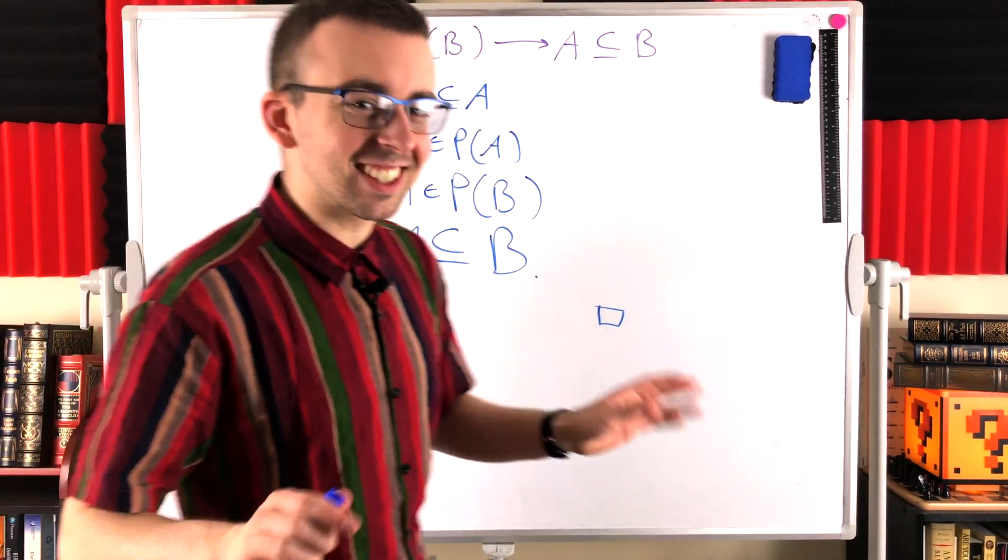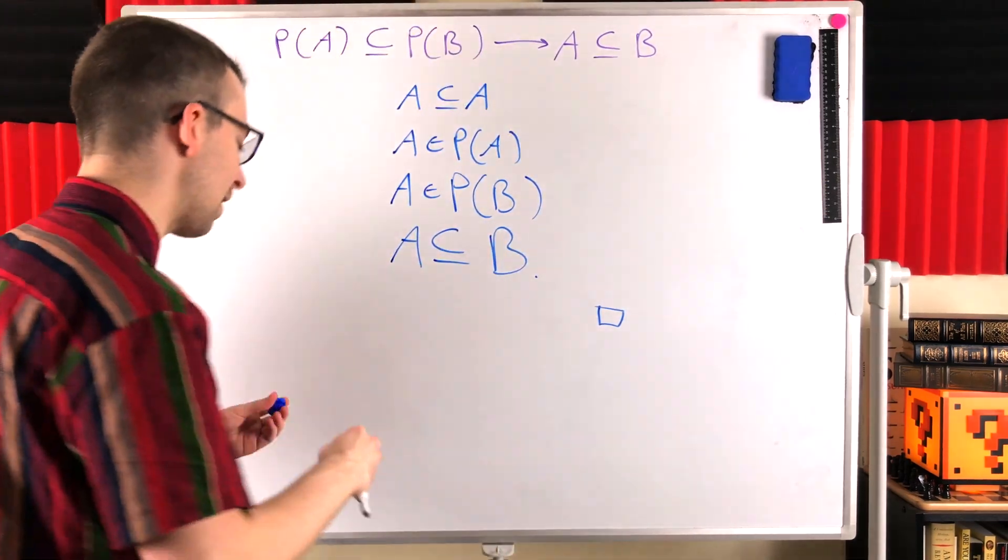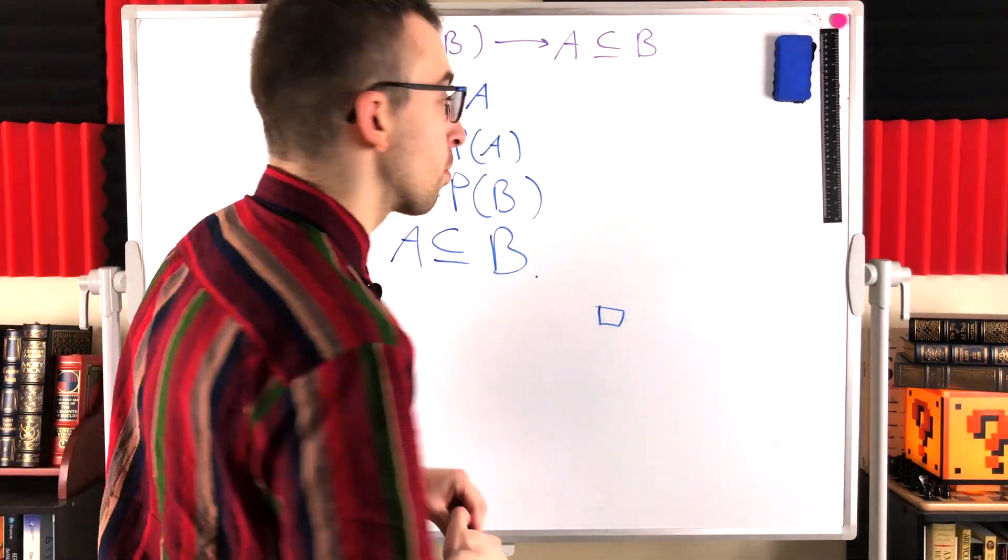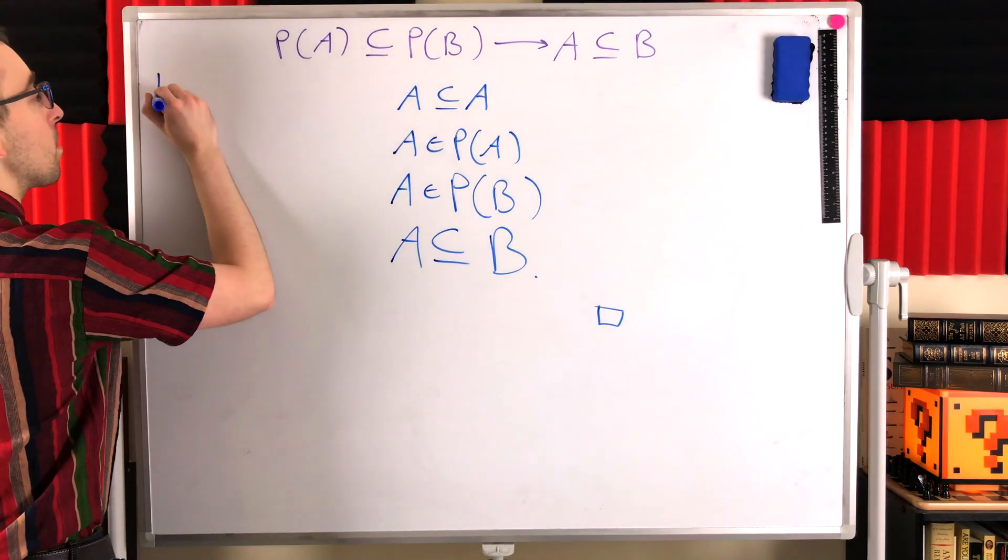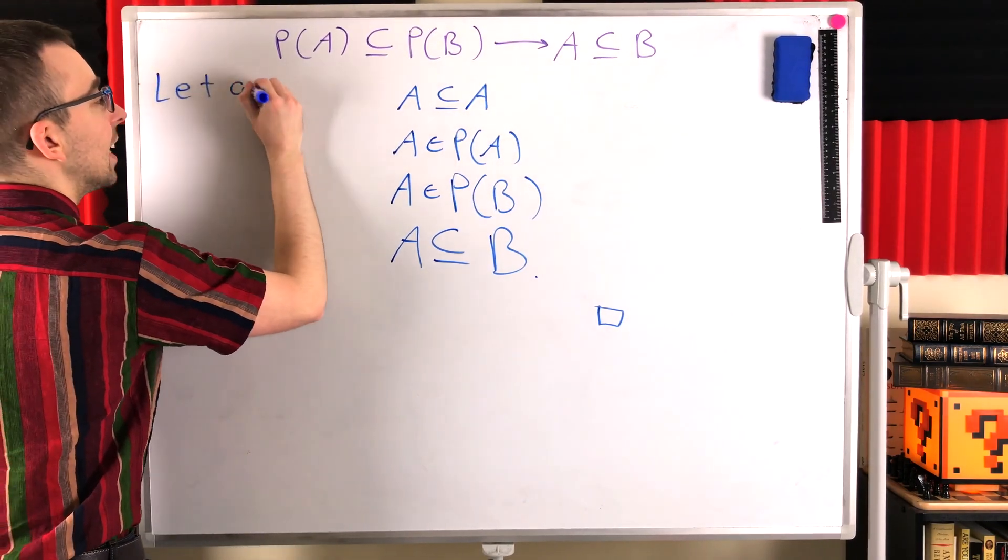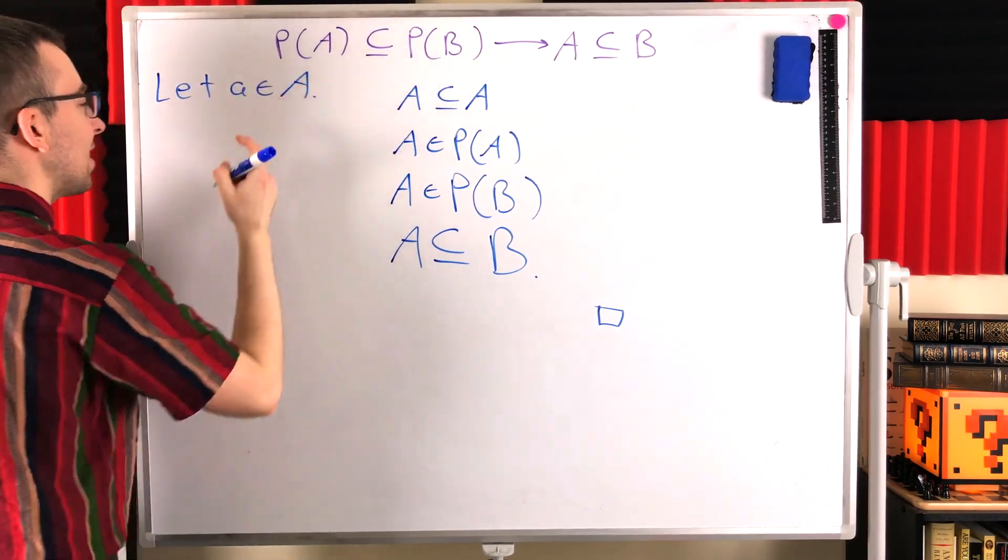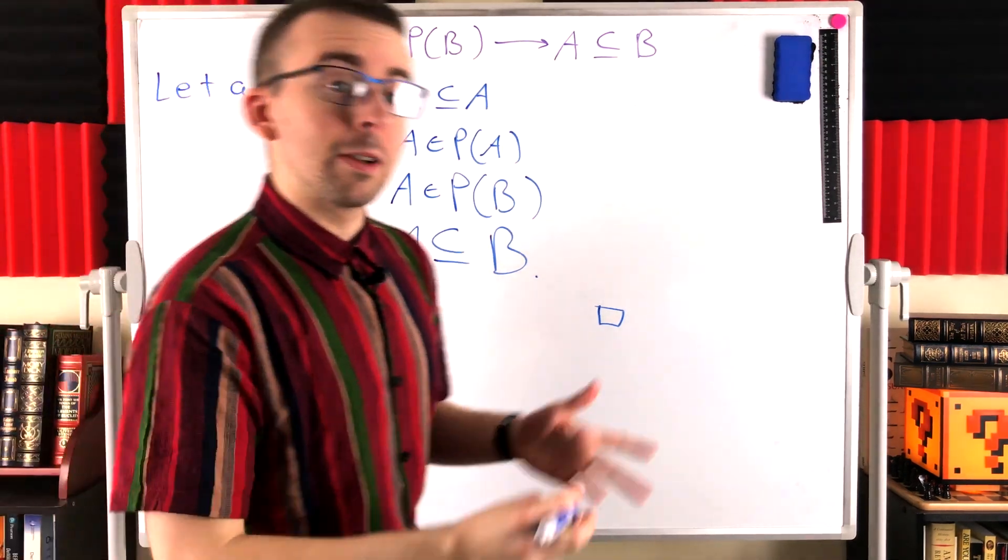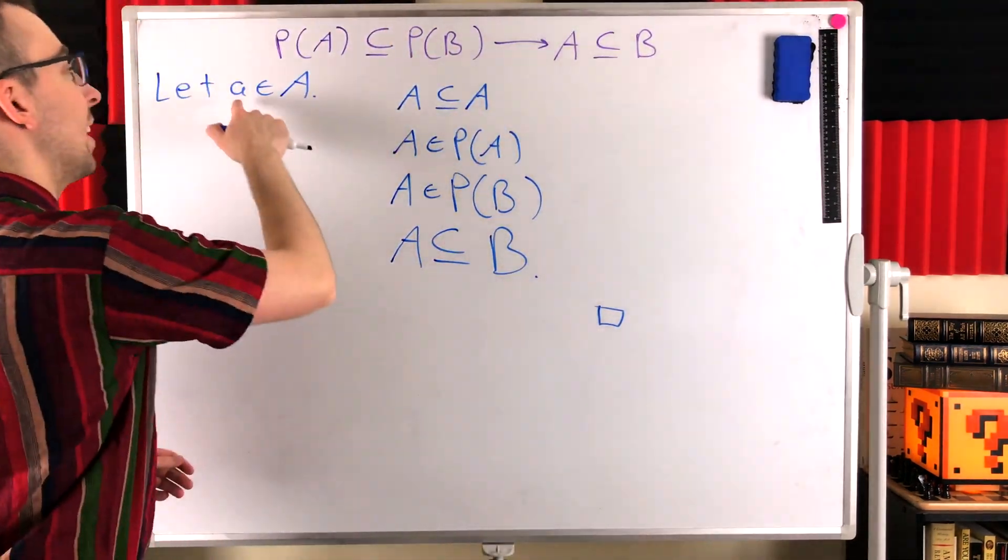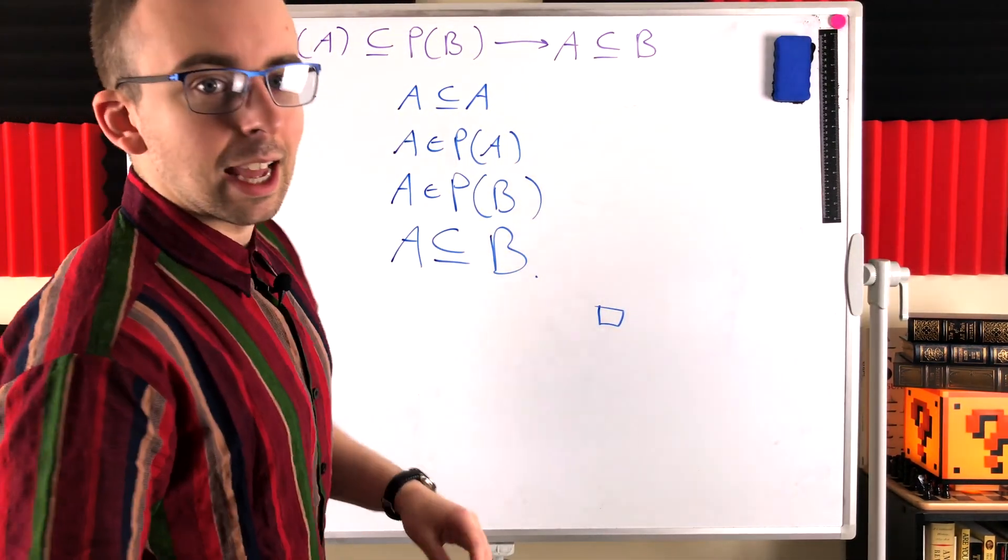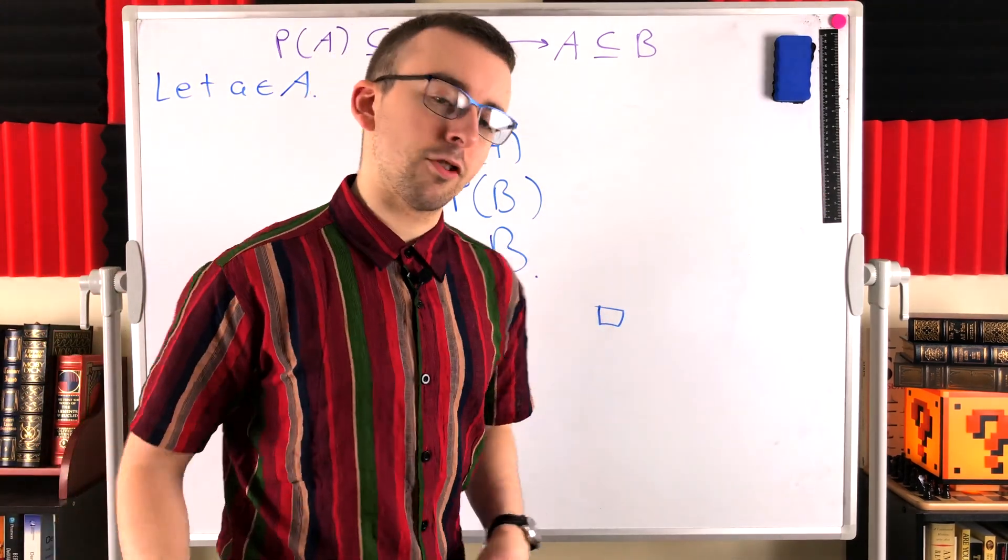So I think that's a really nice, clean proof of this particular statement. But again, you could also prove it by just starting with an arbitrary element from our set, let a be an element of the set A, and then you'd go through a very similar process to show that little a also has to be an element of B. So I would give that a try.